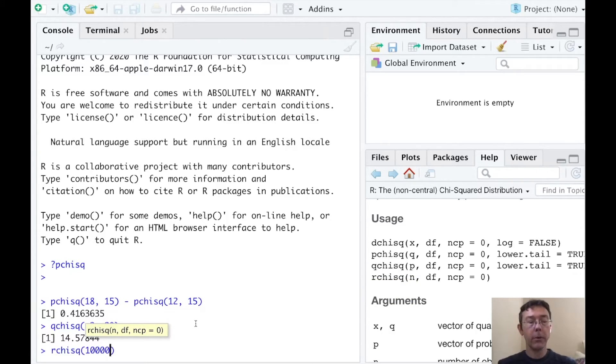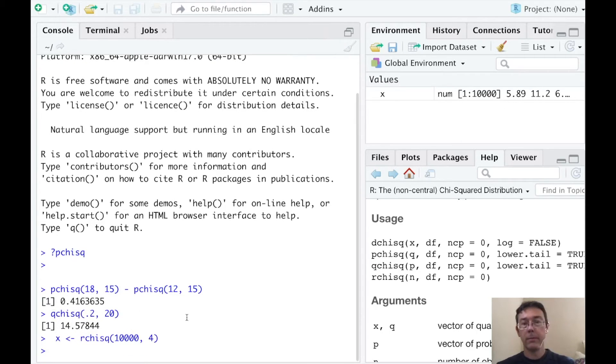First, we feed it the number of random trials we'd like to run, in this case 10,000. And then the number of degrees of freedom. So let's assign this to a variable, maybe let's just call it x. Okay, and then in the environment, you can see that I have a vector of length 10,000.